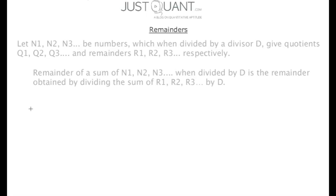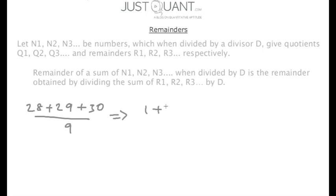For example, the remainder of 28 plus 29 plus 30 when divided by 9 is obtained by first calculating the individual remainders. 28 divided by 9 gives remainder 1, 29 divided by 9 gives remainder 2, and 30 divided by 9 gives remainder 3. The sum of these remainders, which is 1 plus 2 plus 3 equals 6, divided by 9 gives us a remainder of 6. So we individually calculate the remainders, add them, and divide by our divisor d to get the actual remainder.